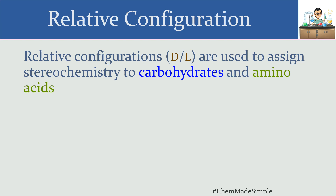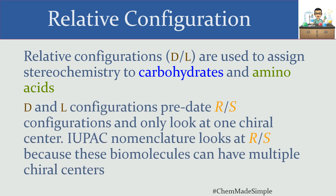If you're wondering why D and L are only used for carbohydrates and amino acids, it's because R and S configurations are actually much more recent and much more robust — they apply to many more scenarios than D and L do. IUPAC nomenclature looks at R and S in preference to D and L because the biomolecules we're looking at can have multiple chiral centers. D and L are only going to look at one chiral center within the molecule and assign configuration based on that one chiral center.